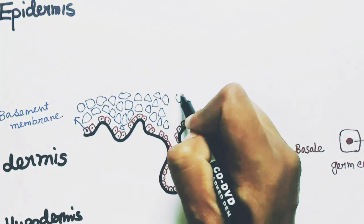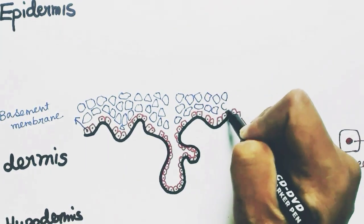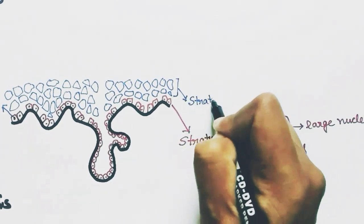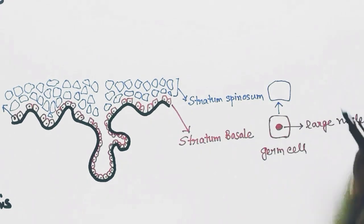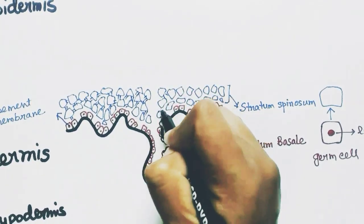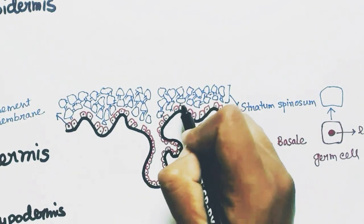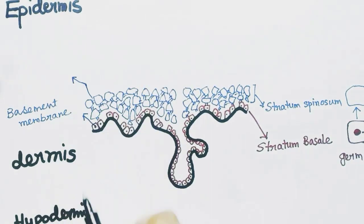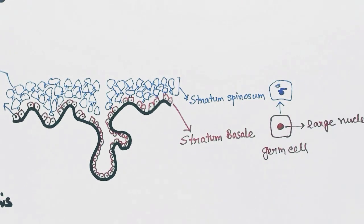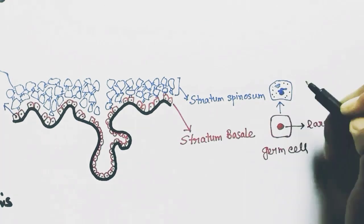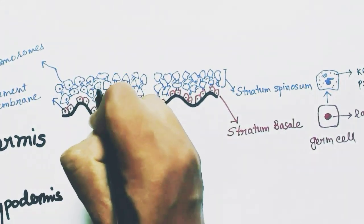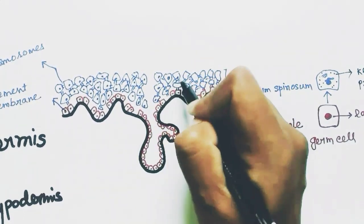New cells are produced and pushed upwards. This layer of cells is called the stratum spinosum — spinosum because they look like spines. These cells are connected to each other by desmosomes and are connected to the stratum basale by hemidesmosomes. These cells start producing keratin protein inside them; that is, the keratinization process starts in the stratum spinosum.